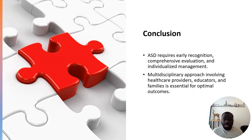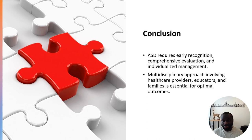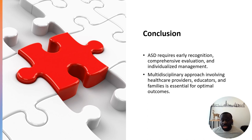Autism spectrum disorder requires early recognition because of the impact it can have on a child's development — social development and language development especially. We need to identify it and make this diagnosis early, initiating interventions as soon as possible. Management has to be individualized because ASD presents differently, and everyone will have different challenges. A multidisciplinary approach involving healthcare providers, educators, teachers, and families is essential for optimal outcomes.